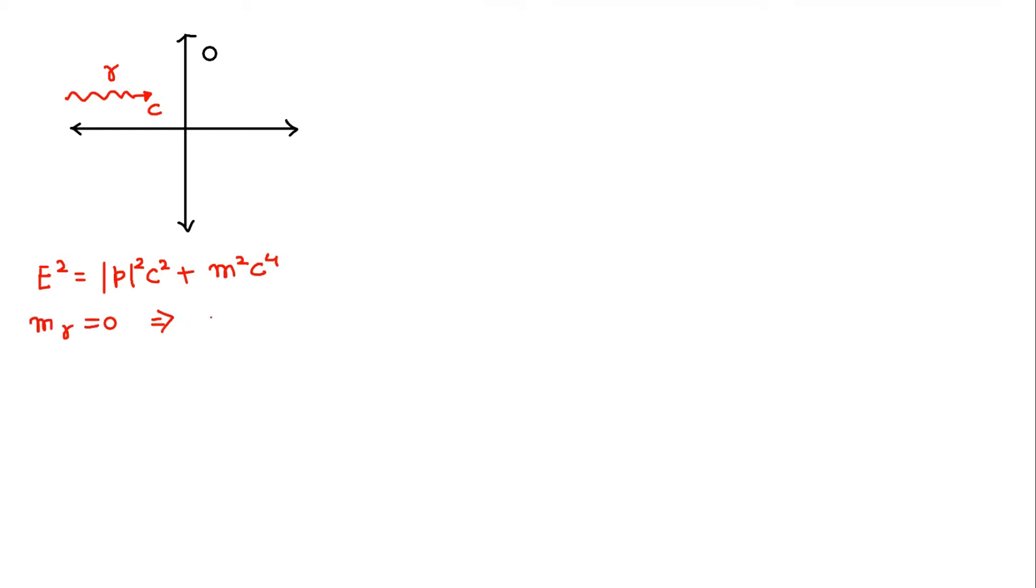We use the relativistic relation between energy and momentum to find the momentum of the photon which is the net momentum of our system before pair production. This comes out to be non-zero.